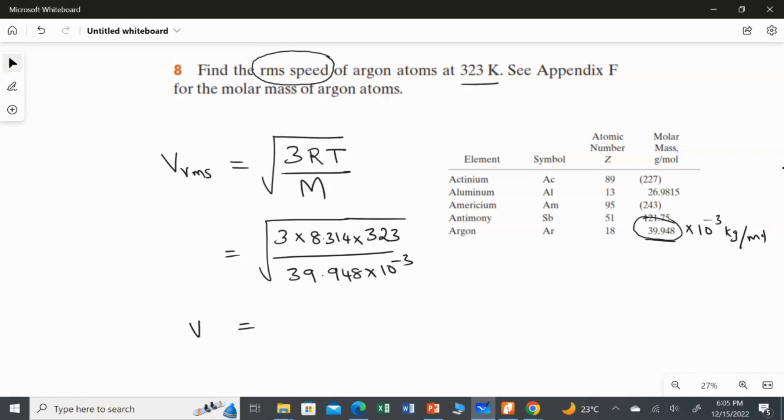I am going to calculate the value of this V_RMS. I got the answer as 449.07 meter per second. So this is the answer for the 8th question.